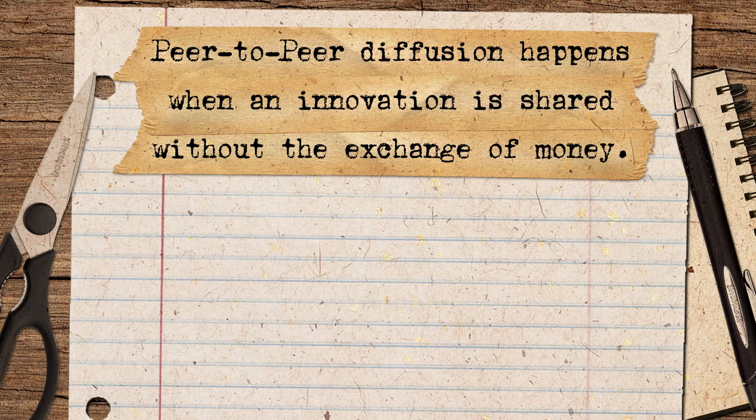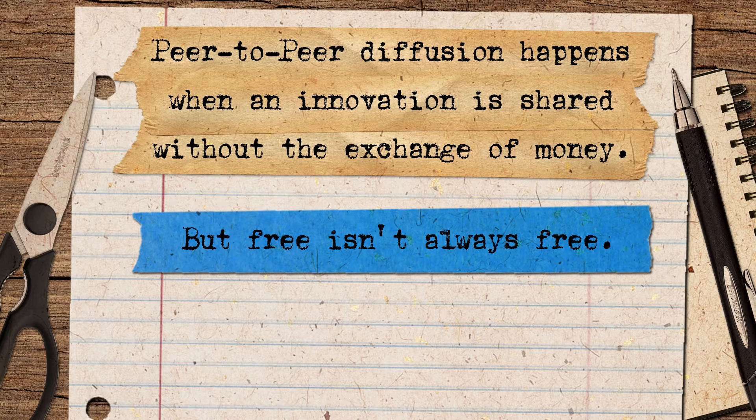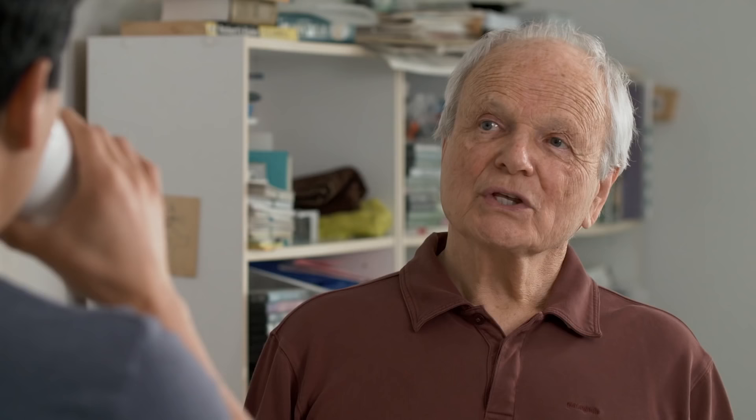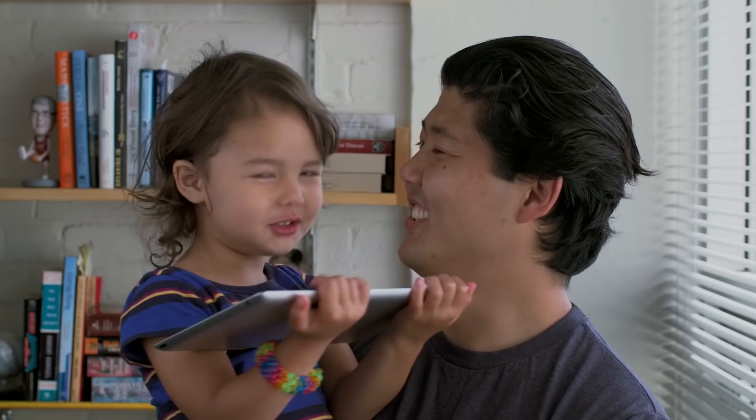So what did we learn here today? Peer-to-peer diffusion happens when an innovation is shared without the exchange of money. But free isn't always free — adopters and innovators both have costs. It's up to you to make diffusion worth it for both sides by reducing costs and increasing benefits. Users benefit from their own innovations — that's fabulous. But if society is going to benefit as a whole, those innovations have to get out there to others. Peer-to-peer diffusion is everywhere. How to do it is something very important for user innovators to learn. So the question is: how will you share your solution?